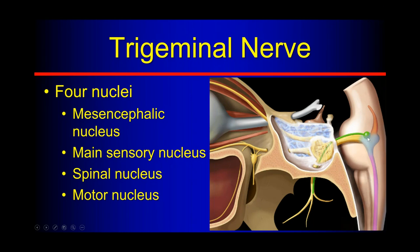The motor nucleus of the trigeminal nerve sends all its fibers through foramen ovale with the V3 division down to the muscles of mastication. Then we have three sensory nuclei: the mesencephalic nucleus going up toward the midbrain, the main sensory nucleus in the pons, and the spinal nucleus extending down into the spine. The main sensory nucleus handles touch and pressure; pain and temperature are mostly in the spinal nucleus; the mesencephalic nucleus handles proprioception to the TMJ and mechanoreception to the teeth.